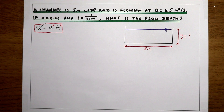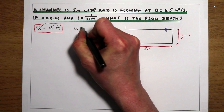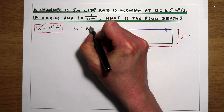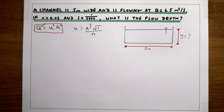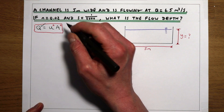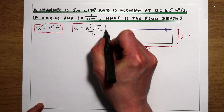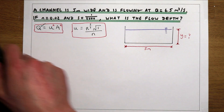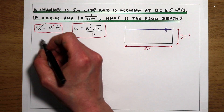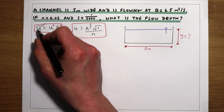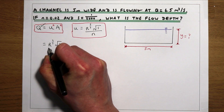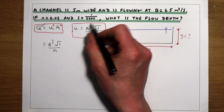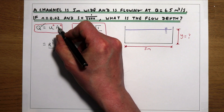What we can do is replace U with Manning's equation. Manning's equation tells us that U is equal to the hydraulic radius to the power of 2/3 times the square root of the channel slope divided by Manning's N. This gives us an expression for velocity, and we can replace U in the continuity equation with Manning's equation, giving us Q = R^(2/3) × √(S/N) × A, where the first part is Manning's equation for velocity and A is the cross-sectional area of the flow.